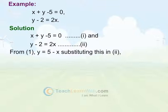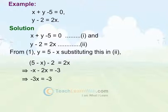Substituting this in 2, we get 5 minus X minus 2 equals to 2X. Which implies minus X minus 2X equals to minus 3. Minus 3X equals to minus 3. Which implies X equals to 1.